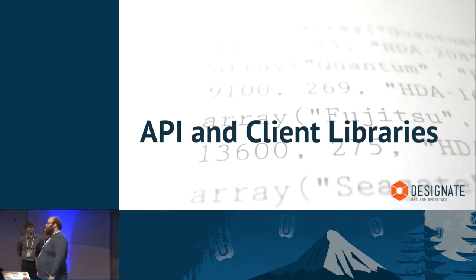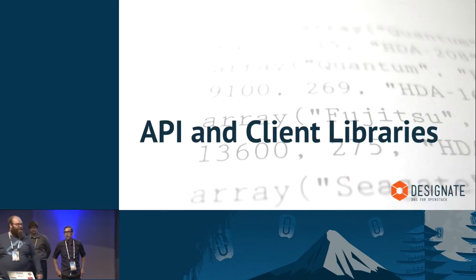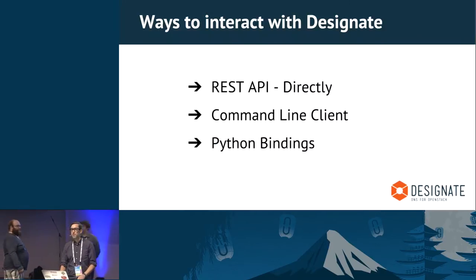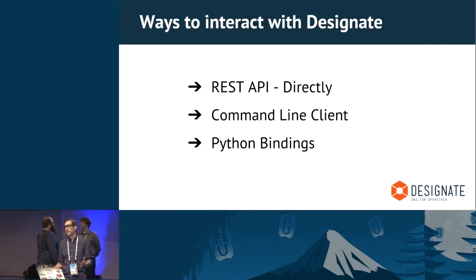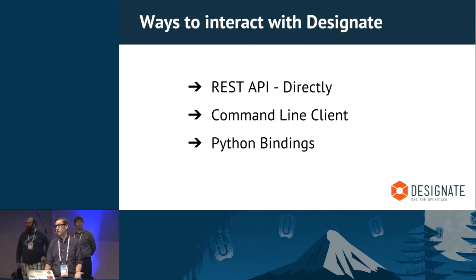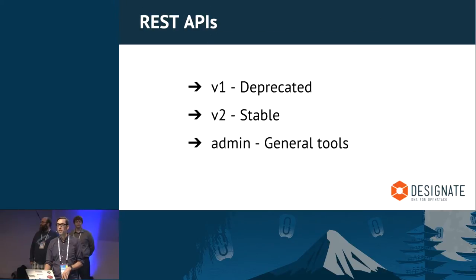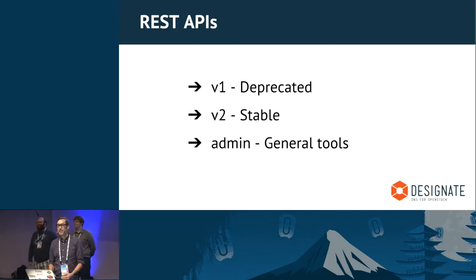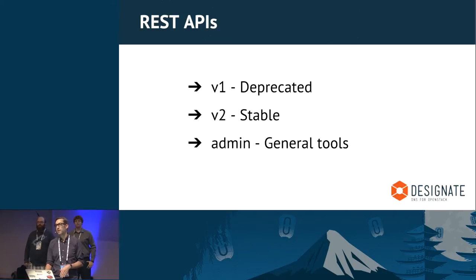Eric is going to go through the best ways to work with Designate. There are three ways to talk to Designate: a REST API, a command line client, and Python bindings. Starting with the REST API — there is a version one, but it is deprecated, so don't use it. There is a V2 API that's stable, and this is the one you should focus on. It's what the command line client and Python bindings use. There's also an admin API for administrator tasks.